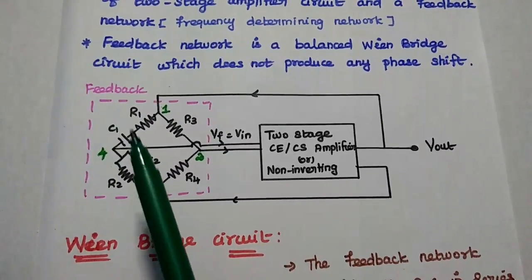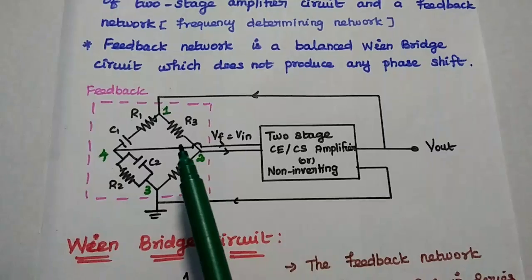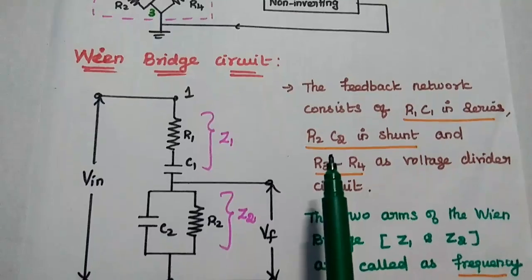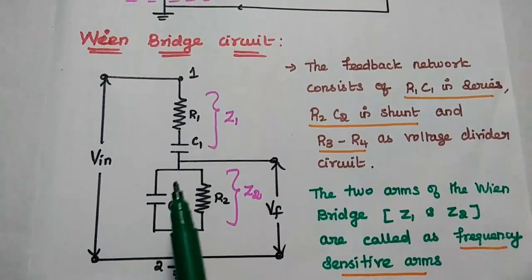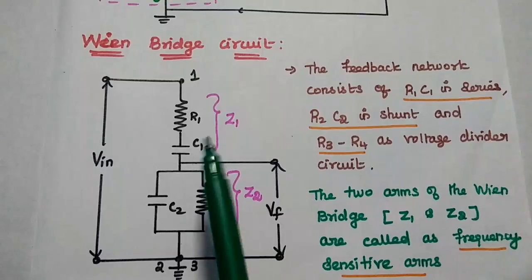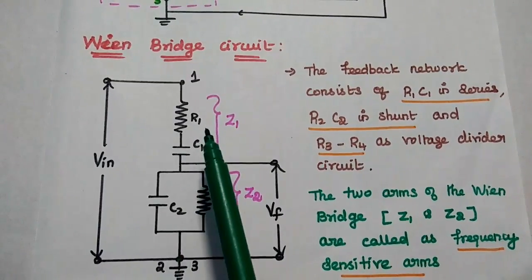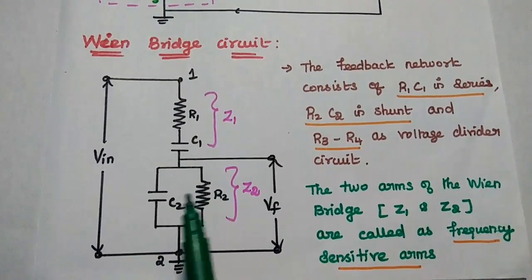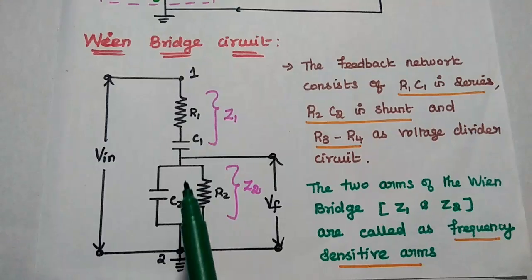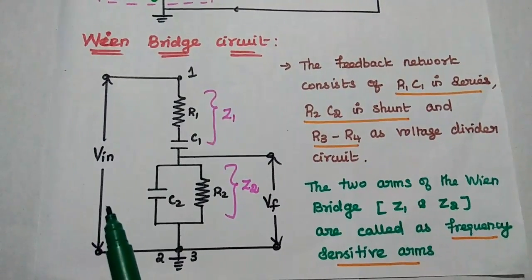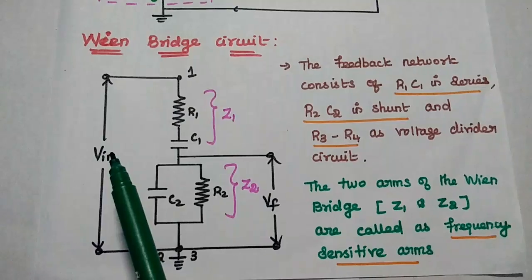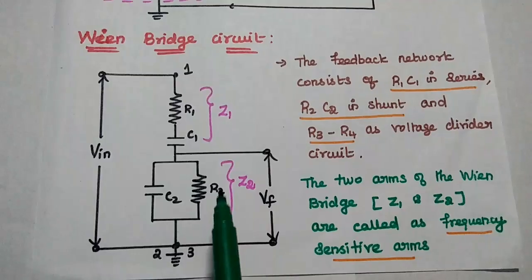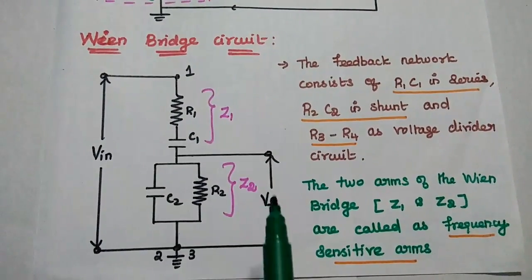This balanced circuit consists of one series arm, one parallel arm, and one voltage divider circuit. Here we consider only the Wainbridge circuit. The series arm consists of R1 and C1 connected in series. The parallel arm consists of R2 and C2 connected in parallel. Both are connected in series. We can give the input — that is, the output from the amplifier stage — to this feedback network between terminals one and three, and we can take the feedback signal across Z2.